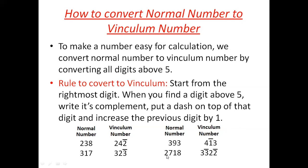Next example: 2718. Start from the rightmost digit. 8 is above 5, so take its complement. Complement of 8 is 2. Put a bar and add 1: 1 + 1 = 2. Next digit, 7, is above 5, so take its complement. Complement of 7 is 3. Put a bar and add 1: 2 + 1 = 3. Any number with at least one digit above 5 can be converted to Vinculum, and once converted, it becomes easier and faster for calculation. Thank you.